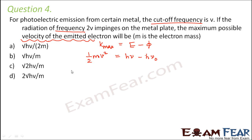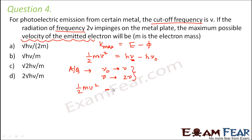Now as per the question, the value of the cutoff frequency is nu. That means nu-0 for us is actually nu in the question. Similarly, nu in our formula is actually equal to 2-nu as per the question. So these are the values given in the question. Let us put those values. We get: half mv squared is equal to H times 2-nu minus H times nu. So this is equal to 2H-nu minus H-nu, which is equal to H-nu.